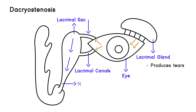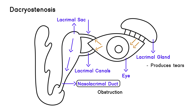Finally we get to this part, which is known as the nasolacrimal duct. This topic is of course the obstruction of this — either an obstruction or a stenosis. What that does is it prevents the proper drainage of the tears into the nasal cavity. If this is blocked or stenotic for whatever reason, then the tears cannot drain into the nasal cavity.